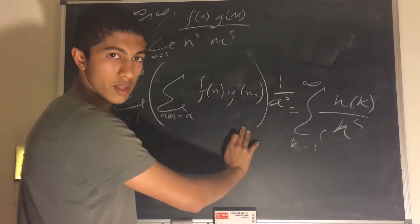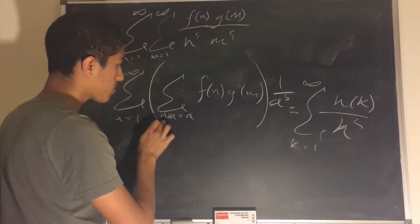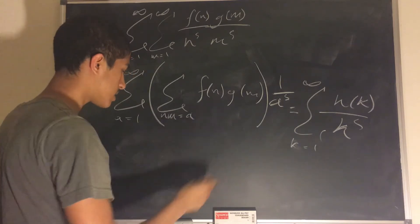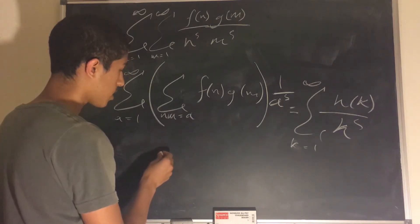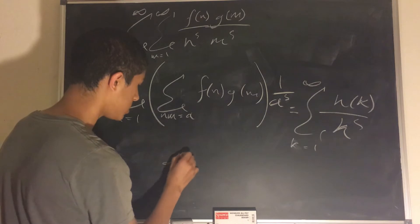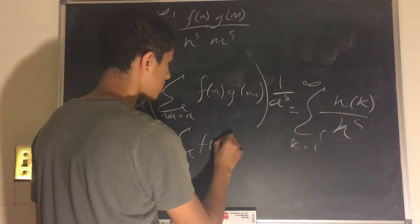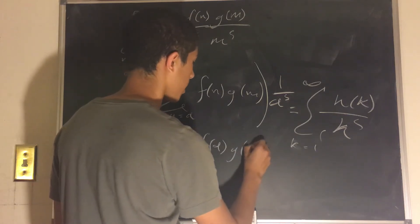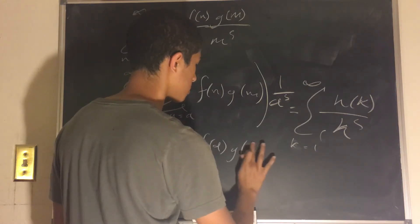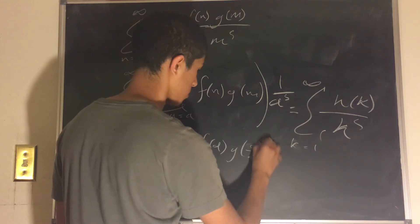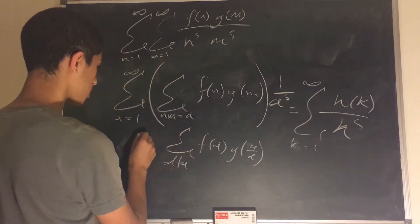And what is this sum, let's ask ourselves? When you have nm is equal to a, that's equivalent to saying d divides a. So d divides a sigma f of d and g of a over d.